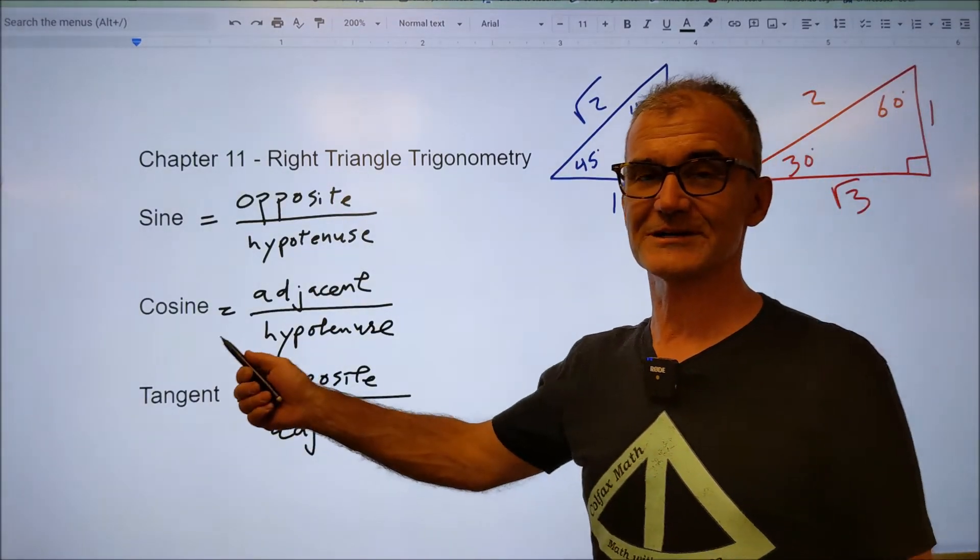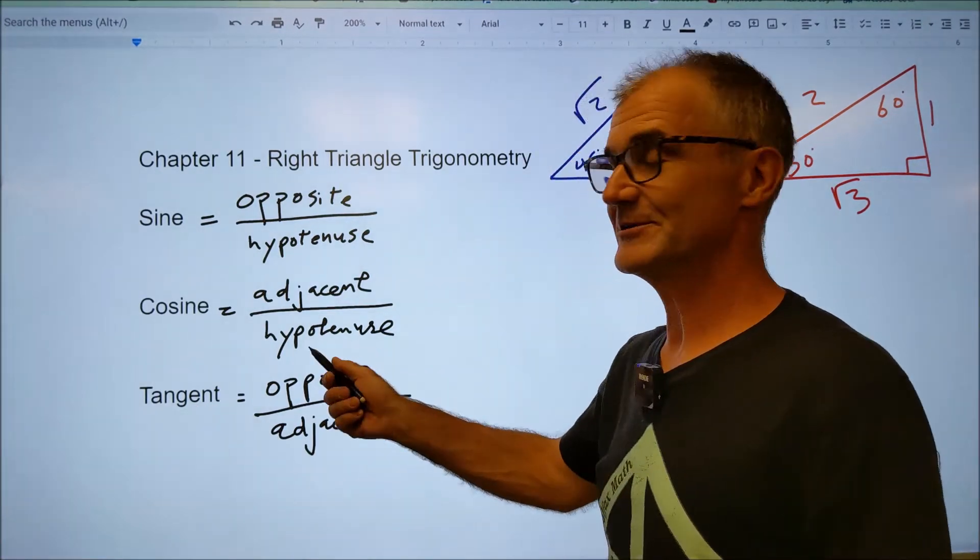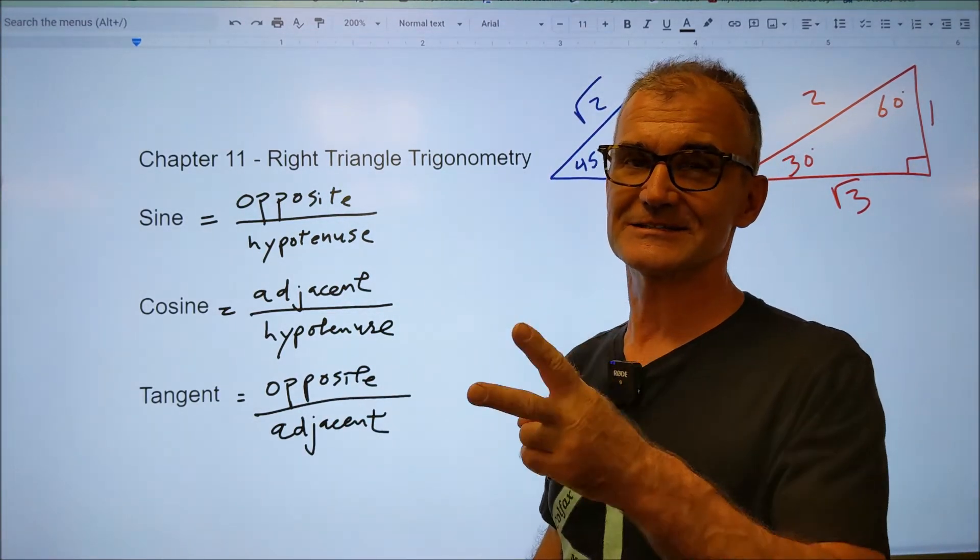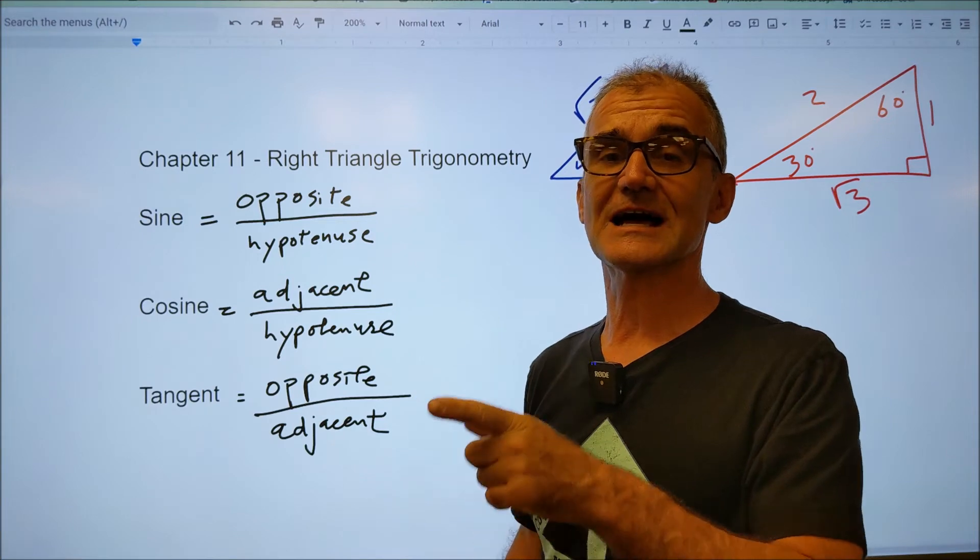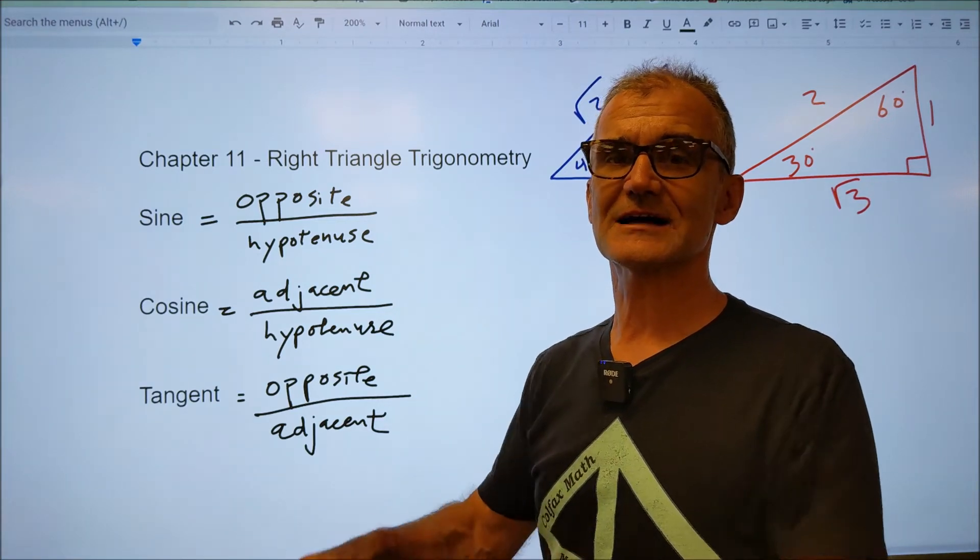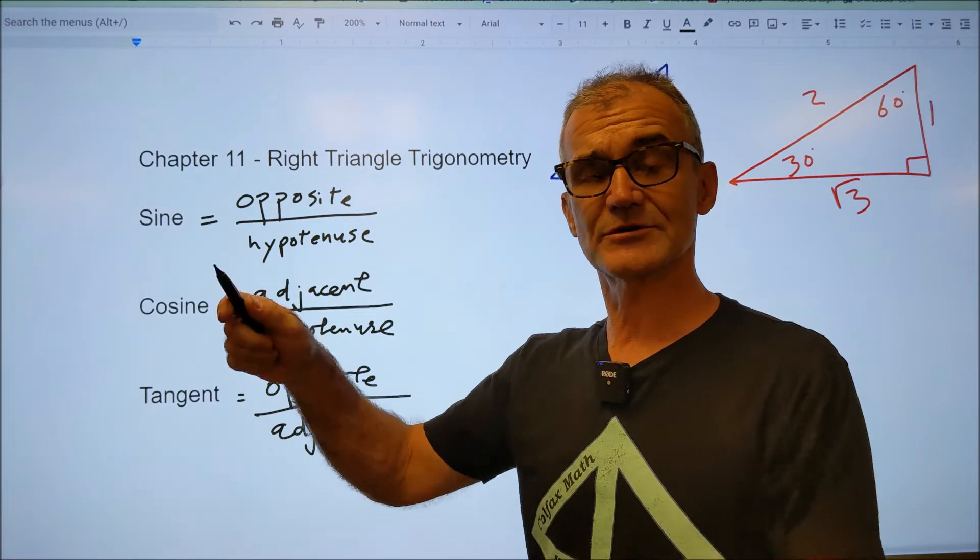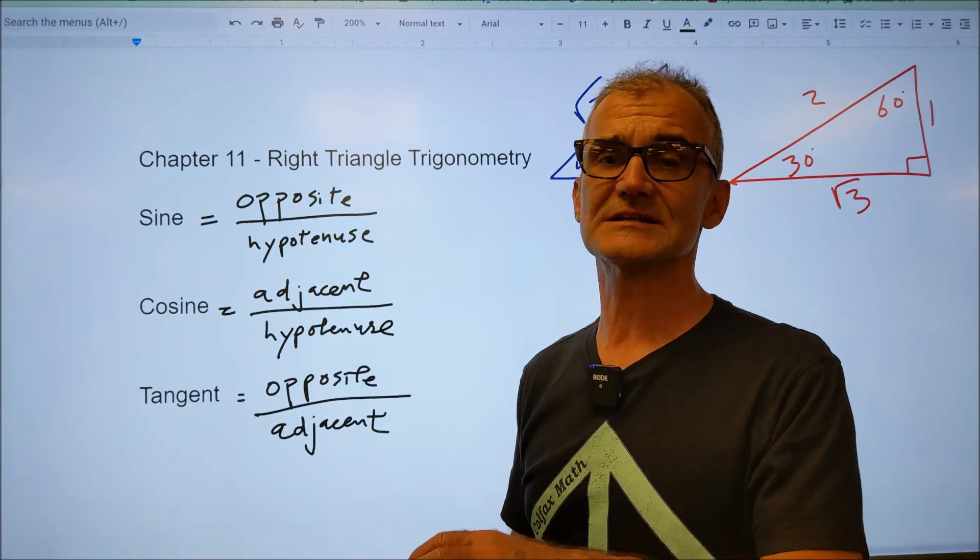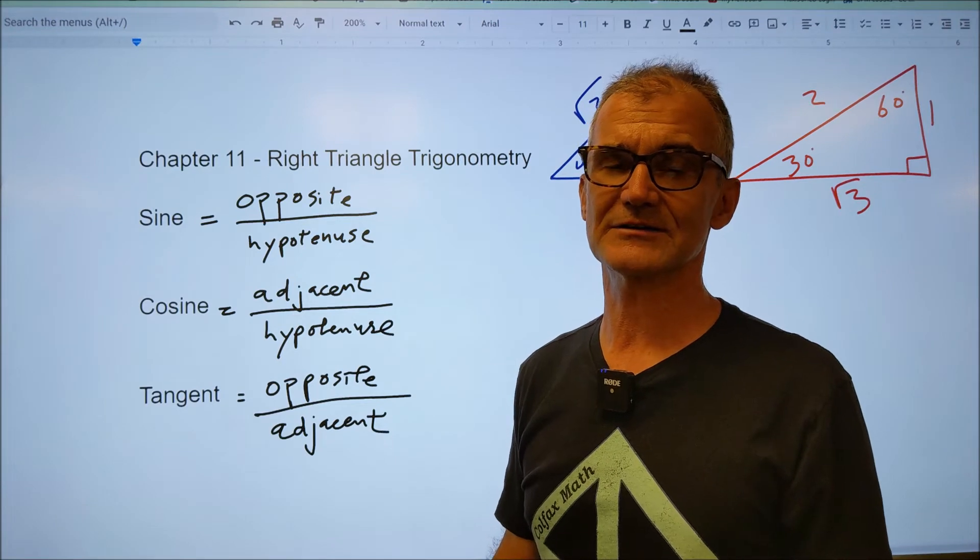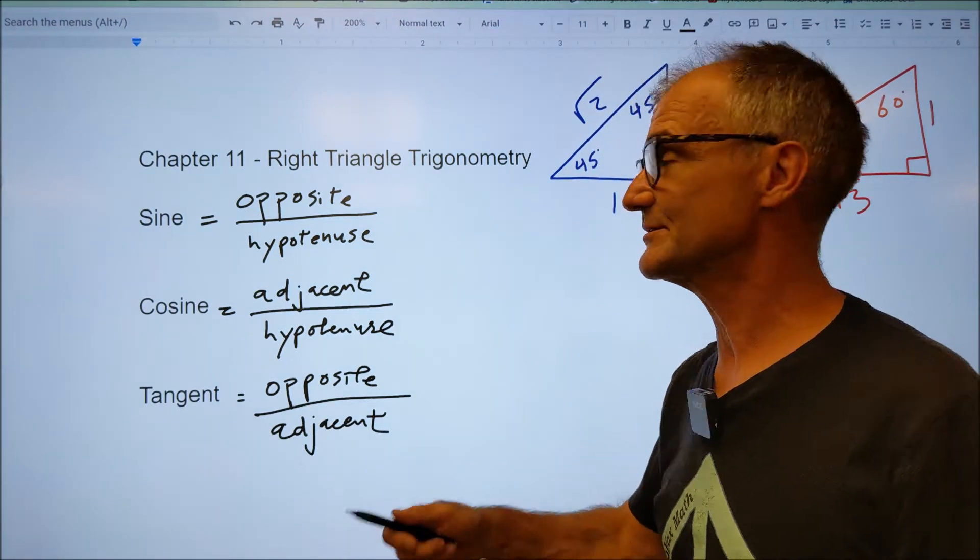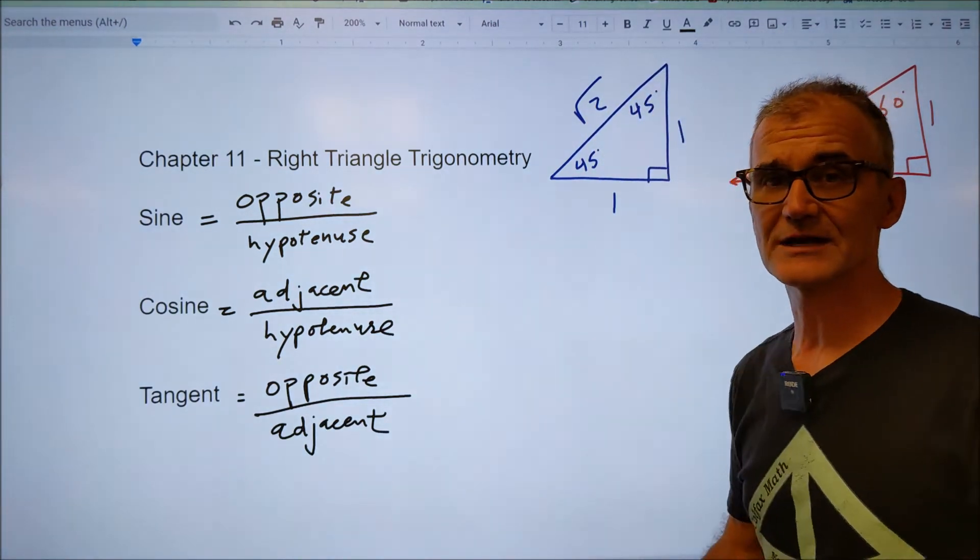All right, we're almost ready to get started on these three Greek words. Before we do that, let me go over one more thing. Actually, two more things. The first is exact versus approximate. Exact means you're going to leave it in fractional form, square root form, or in terms of the Greek letter Pi. Approximate means a decimal approximation using a calculator. There are two approximate value triangles you have to know and memorize.